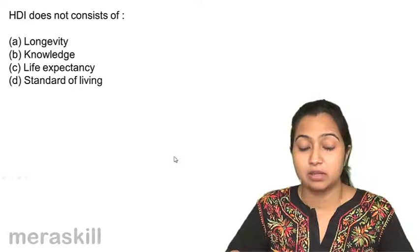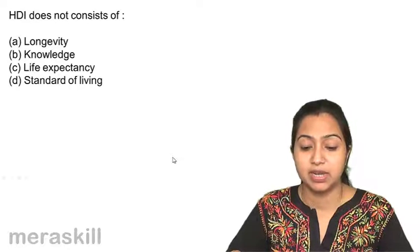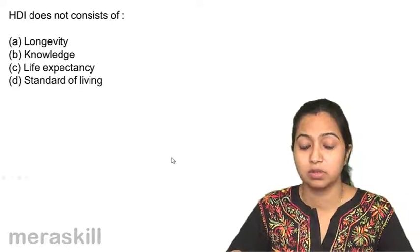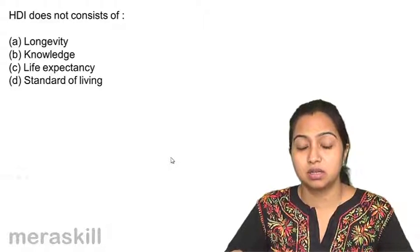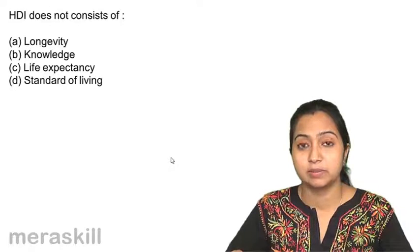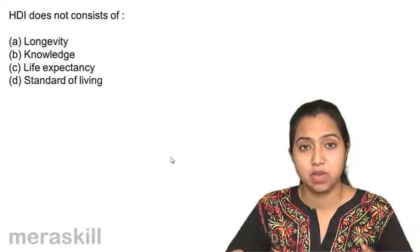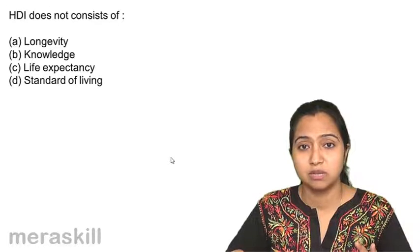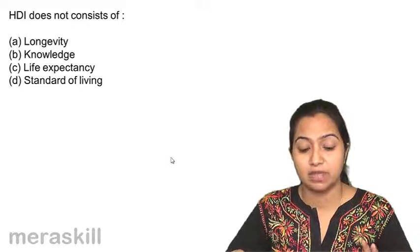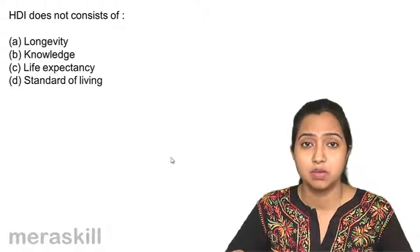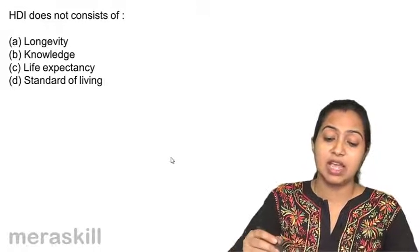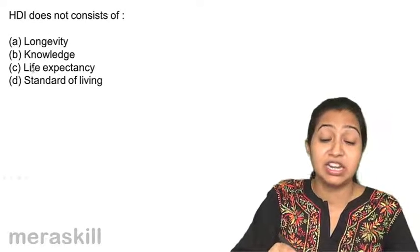HDI or the Human Development Index does not consist of. There are three indicators. Life longevity, knowledge, standard of living. Life expectancy is a part of longevity. But longevity means a healthy and a long life. So, longevity, knowledge and standard of living are the three basic indicators of HDI. And life expectancy is not an indicator.